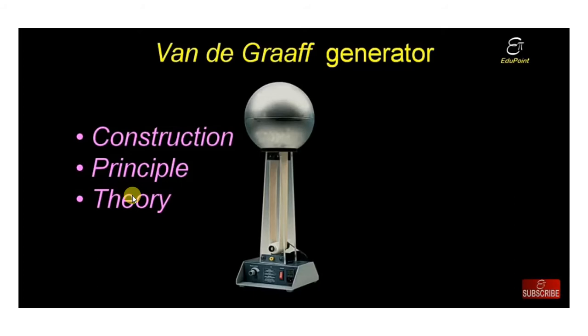In the construction, here is a photograph of the Van de Graaff generator. The belt shown here is known as the insulating belt, used to carry and deliver charge — also called the conveyor belt. There is also a metallic brush, also known as a comb.